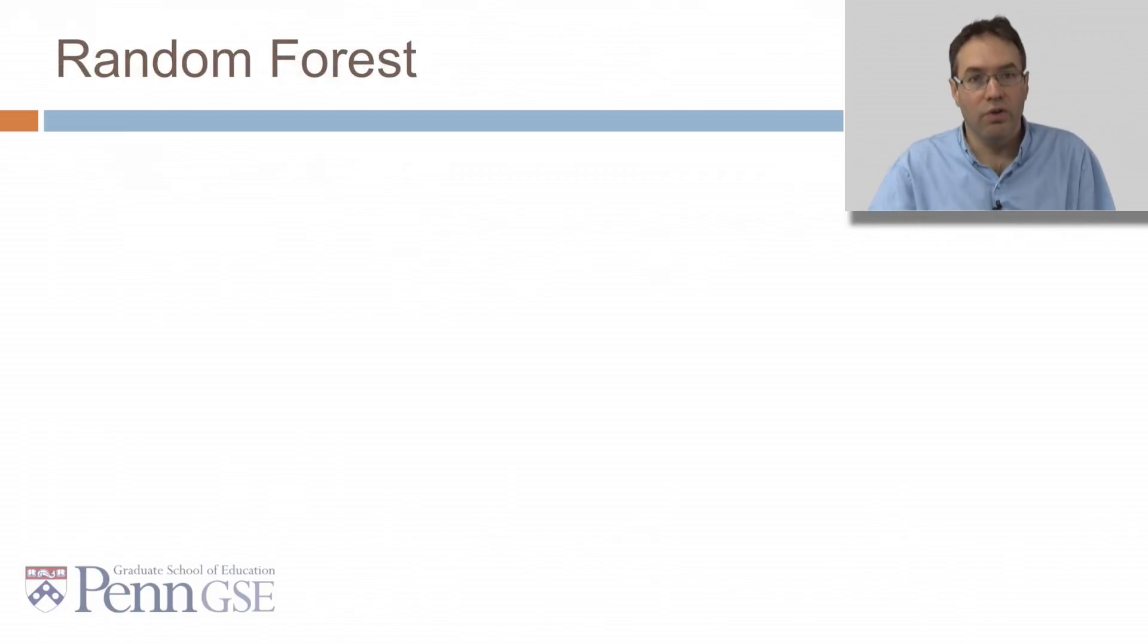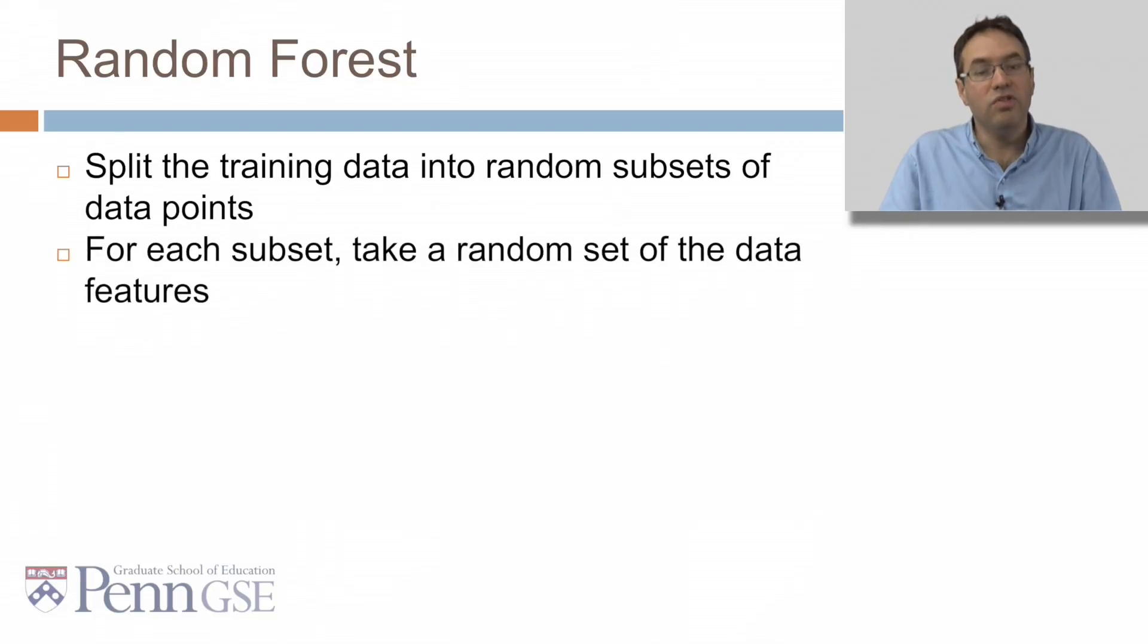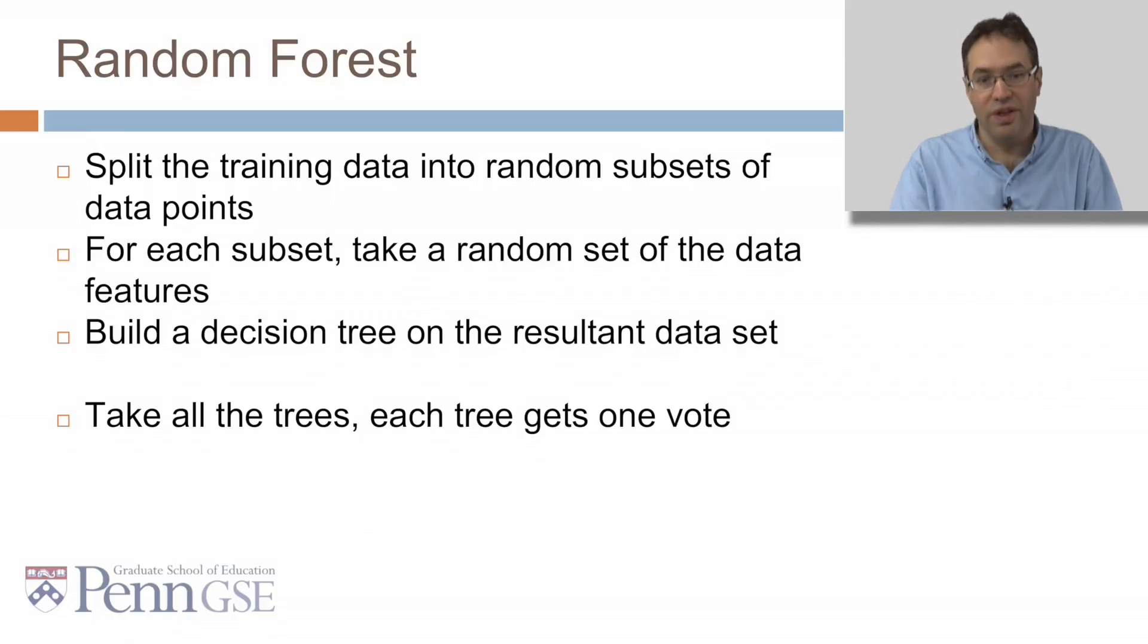Another less conservative algorithm is Random Forest. In Random Forest, we split the training data into random subsets of the data points. And then for each subset, we take a random set of the data features. We build the decision tree, doesn't really matter which algorithm, on the resultant data set. And we take all the trees together then. And each tree gets one vote, we go with the majority vote.